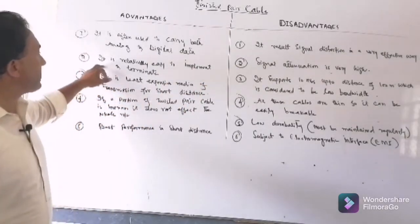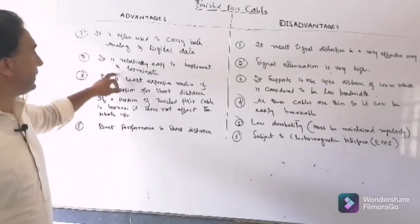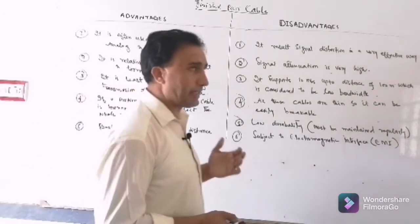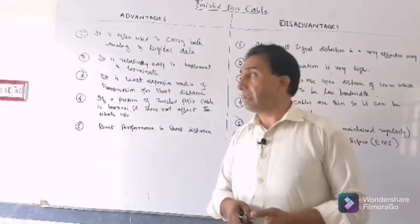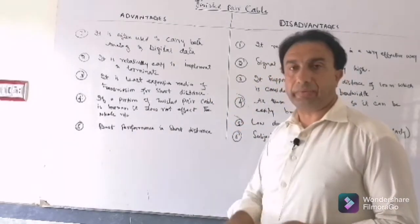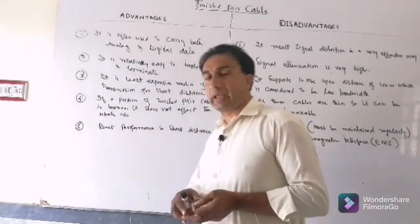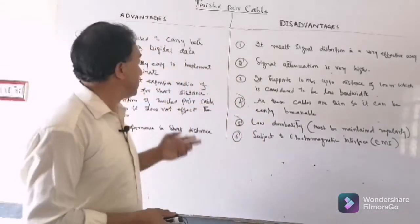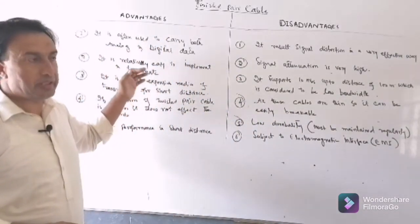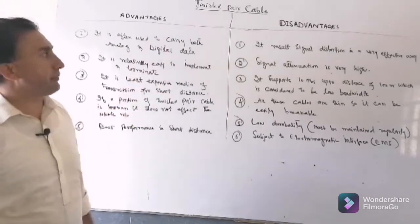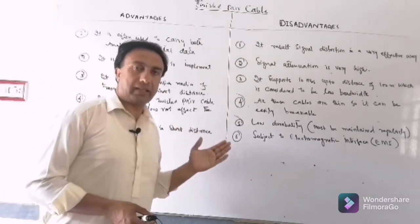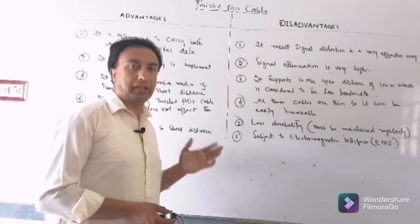Second, it is relatively easy to implement and terminate. This twisted pair cable is easy to implement and to terminate as well. It is very easy to work with the twisted pair cable as compared to the coaxial cable and the optical fiber.